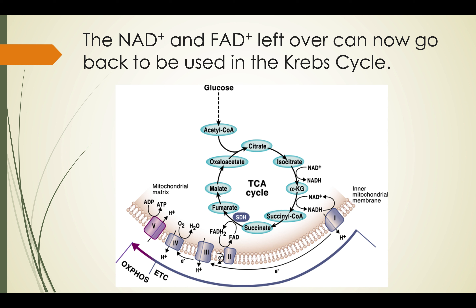That oxidized NAD and FAD can now go back into the Krebs cycle. This picture shows the cycling of NAD and NADH, FAD and FADH2. The TCA cycle, by the way, is just another name for the Krebs cycle. Notice that these two processes are linked — if one stops, the other one stops, because they are each reliant on a product of the other one. Oxidative phosphorylation requires NADH and FADH2, and the Krebs cycle requires those oxidized forms, NAD and FAD.